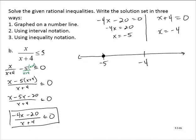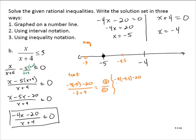Testing a number less than negative 5, how about negative 7? Negative 4 times negative 7 minus 20 over negative 7 plus 4: that's positive 28 minus 20, which is positive, divided by a negative — so this interval is negative. Testing between negative 5 and negative 4, how about negative 4.5? Negative 4 times negative 4.5 is positive 18, and 18 minus 20 is negative; negative 4.5 plus 4 is negative. A negative divided by a negative is positive.